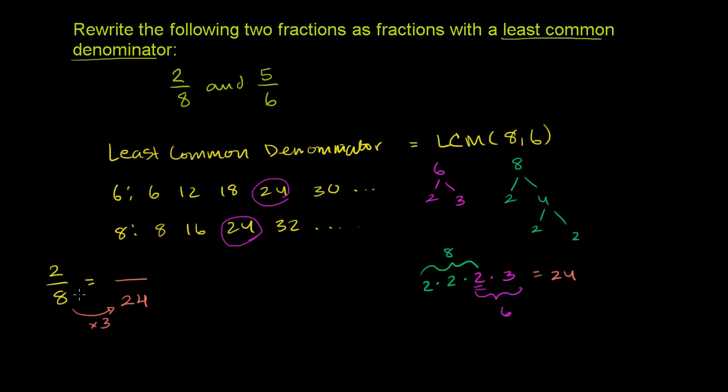And so if we don't want to change the value of the fraction, we have to multiply the numerator and the denominator by the same thing. So let's multiply the numerator by 3 as well. 2 times 3 is 6.